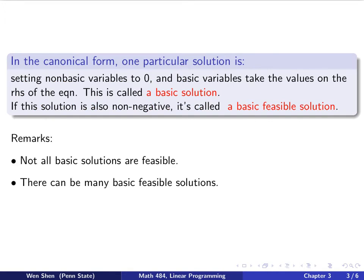Some remarks: first, not all basic solutions are feasible — you might find a basic solution where some terms are negative, which is not allowed. Second, for a given constraint system of an LP problem, there can be many basic feasible solutions. We will see examples of these remarks in the next slide.